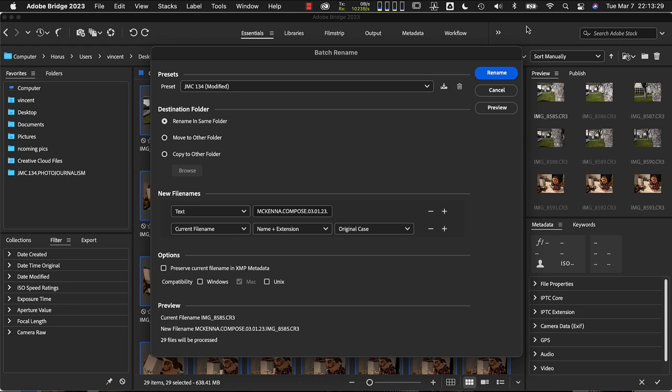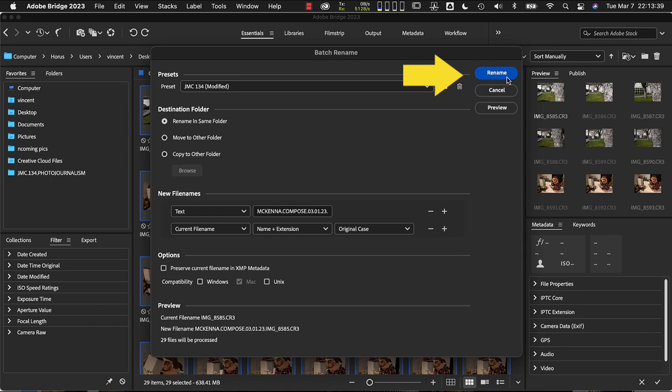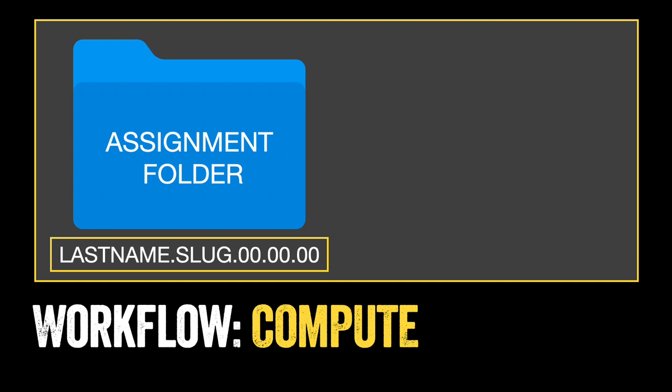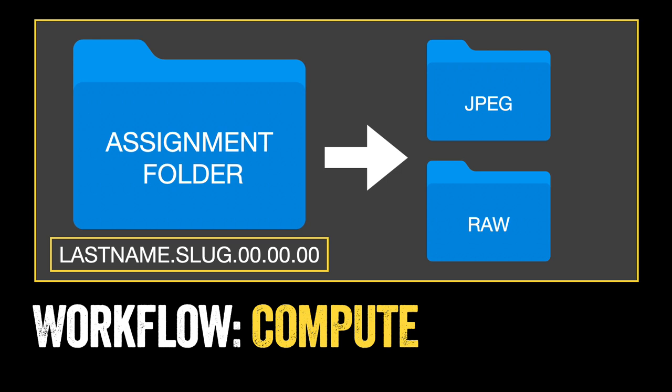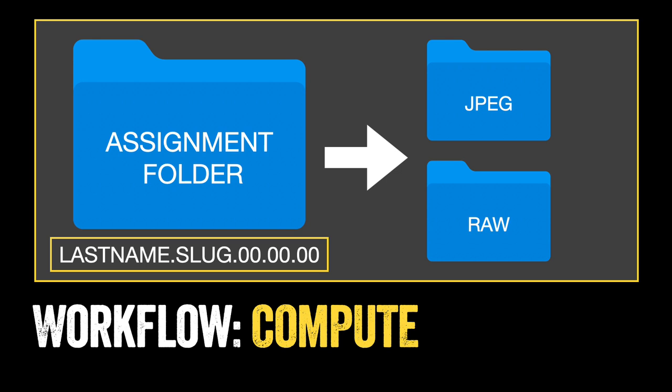Once I've verified the proper file name is typed into the field, I can hit Return or click Rename in the upper right corner. When we turn in our photo assignments, we'll have an assignment folder with the same name as the images. That's why I copied that file name — I'm now going to use Adobe Bridge to create an assignment folder with our last name, the slug, and the date we're turning it in. Inside that folder, I'm going to create a JPEG and a RAW folder so I can quickly sort images when processing.